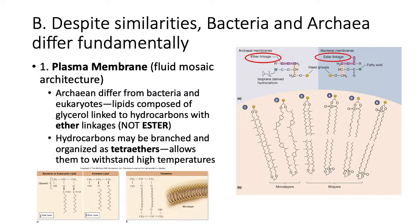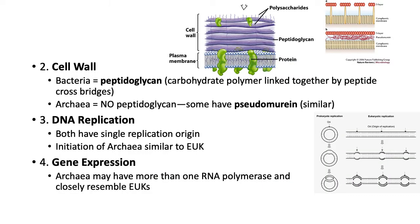Plasma membrane is one difference, and another difference is the cell wall: peptidoglycan versus no peptidoglycan. Some archaea, if they don't have a cell wall, may have a different structure called pseudomurein, which is very similar.